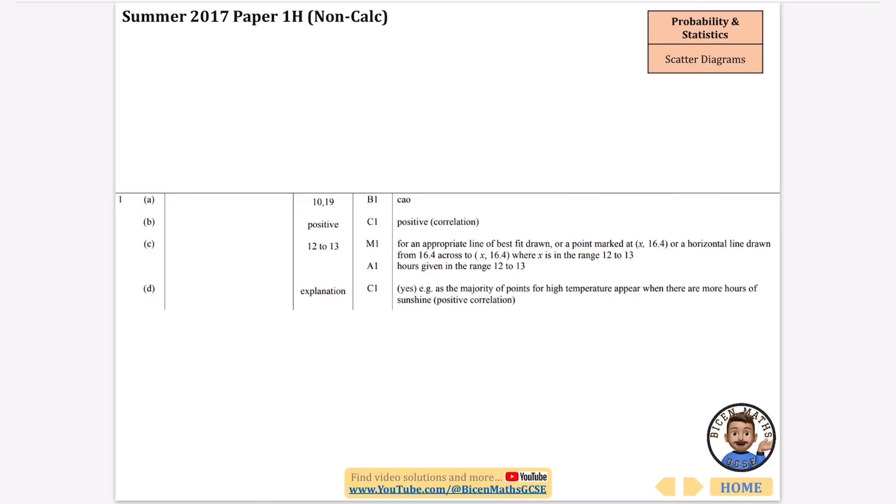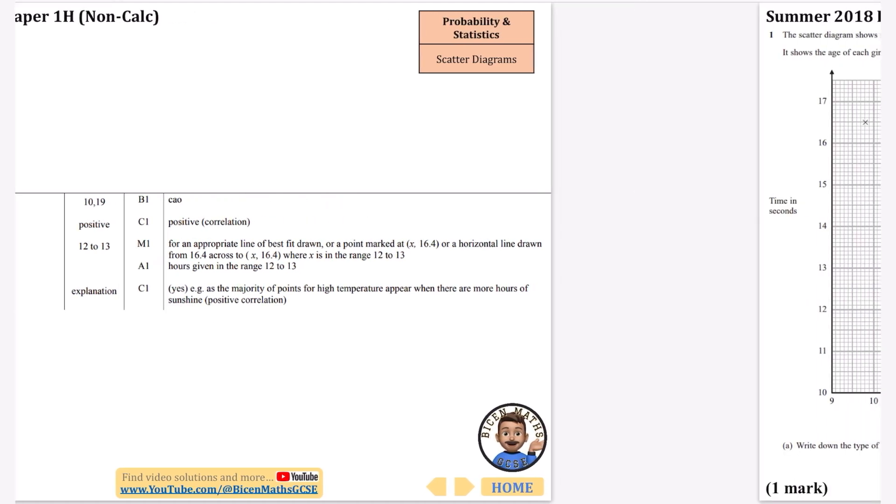The coordinates of the point, we've got 10, 19. We've got positive. Anything between 12 and 13, we got 12.8. And yes, the majority of points for high temperature appear where there are more hours of sunshine. Positive correlation.